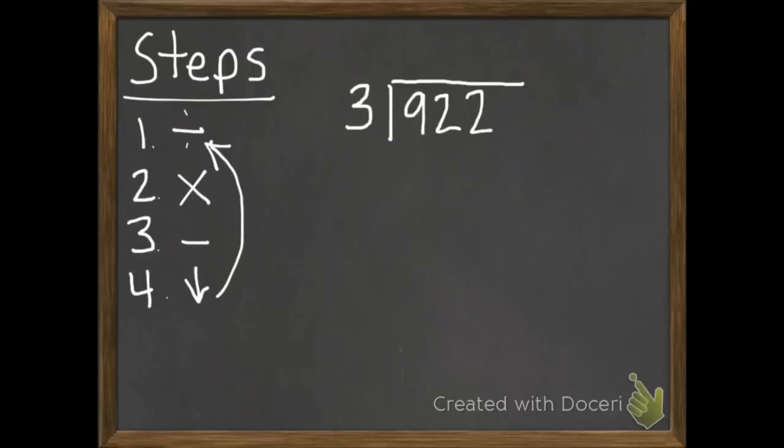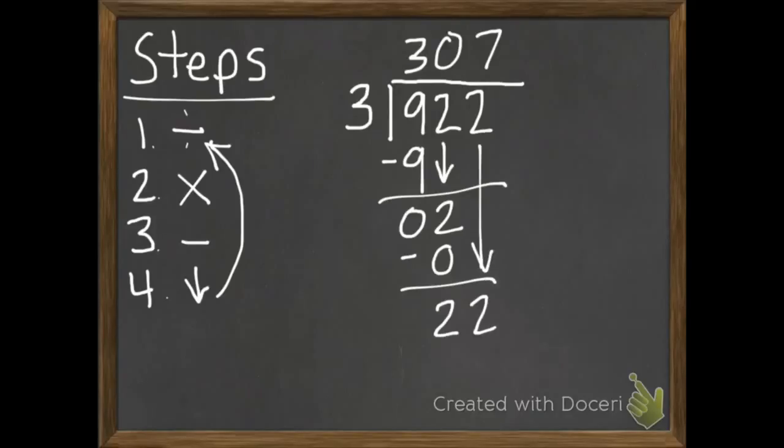Second problem. 922 divided by 3. Same thing, go ahead and pause. Let's see how you did. This time I got my remainder written up there. So 307 remainder 1. You may need to pause again real quick to make sure you had all the steps written down exactly like this.